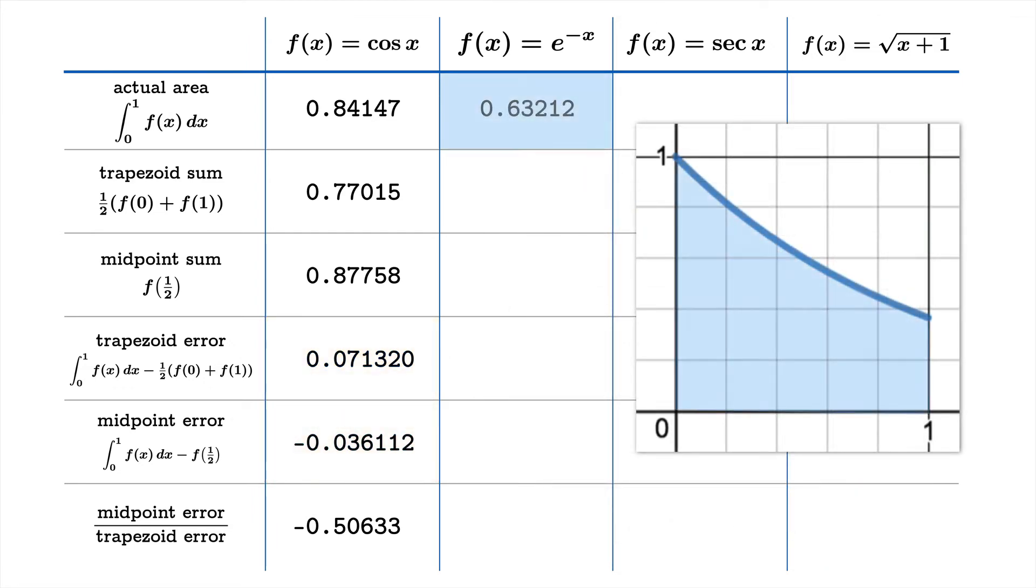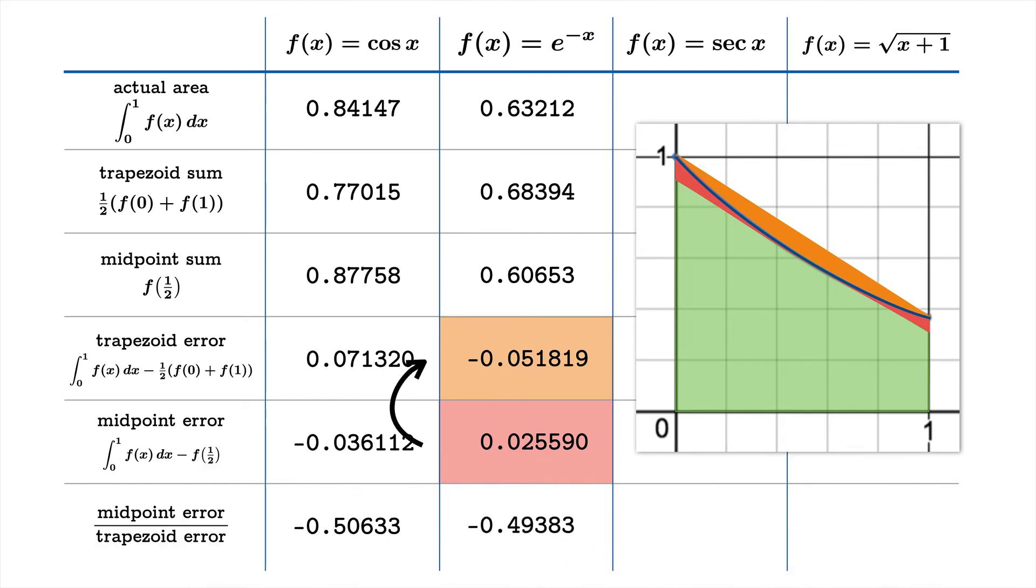On to e to the negative x. Actual value, trapezoid sum too large in this case. The midpoint sum is going to be too small in this case. The midpoint error being positive this time and the trapezoid error being negative this time. These differences of signs - we've seen why one of these will be too large, one of them will be too small, and that's why we're getting different signs for the errors. And this ratio is about negative 0.49383.